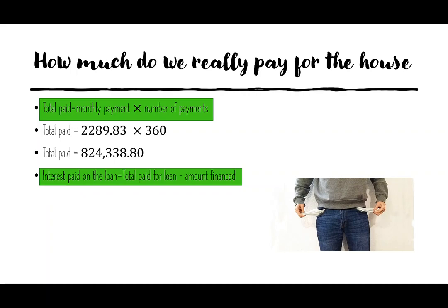To find the interest paid for the loan, we take the total paid and subtract the amount financed. So we paid $824,338.80, but we borrowed $368,000 — that means we paid $456,338.80 in interest.